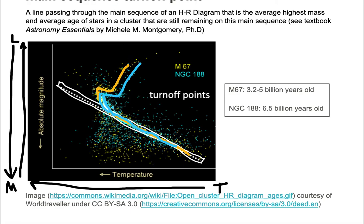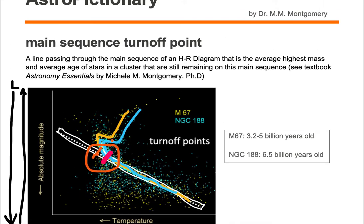We draw lines on the HR diagram through the main sequence that represent the average highest point where we see the stars. The red or pink line is where the blue cluster starts to turn off, known as the NGC 188 main sequence turnoff point. The orange line passing through the main sequence represents the main sequence turnoff point for the M67 cluster. Notice we don't see stars on the main sequence above and to the left of these two lines — these are the main sequence turnoff points for these two clusters.